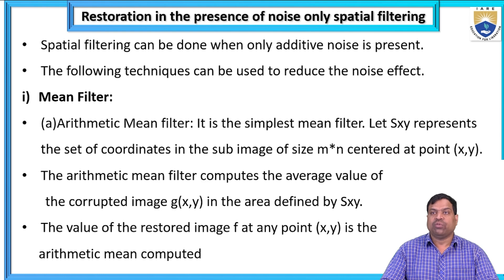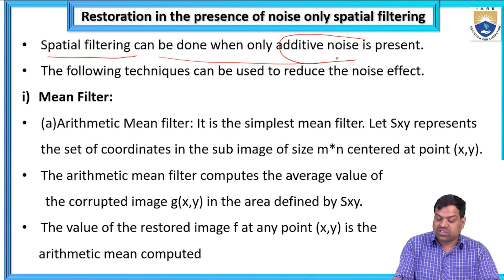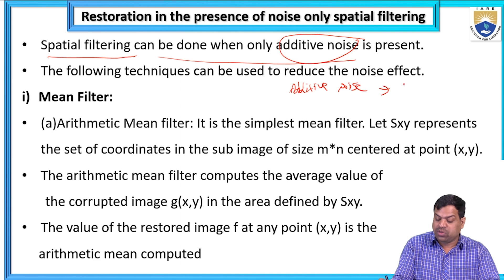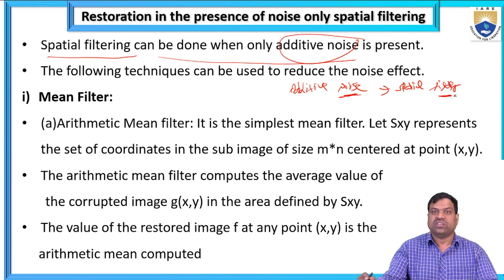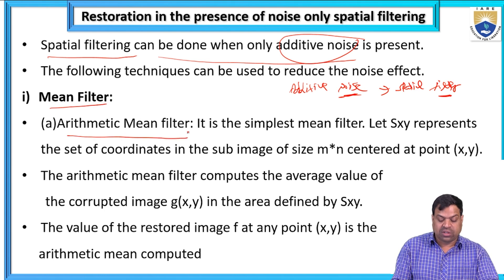Spatial filtering can be done when only additive noise is present. Depending on the type of noise, we use the appropriate type of filter. For additive noise, we use spatial filters. Mean filter is one such filter. In the mean filter, there are several types — the first is the arithmetic mean filter, which is the simplest.